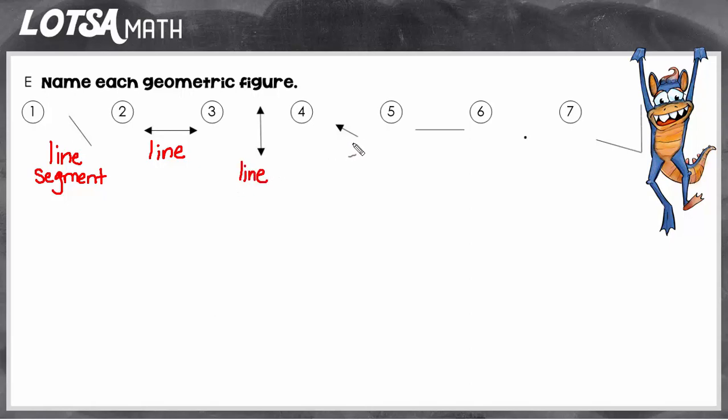Number four looks similar, but it only goes forever in one direction and then it has an endpoint for the other side. So that makes it a ray.